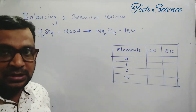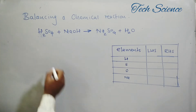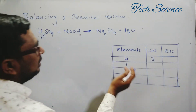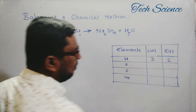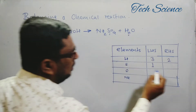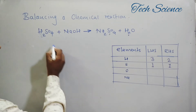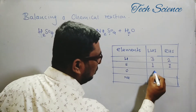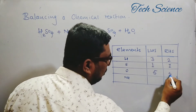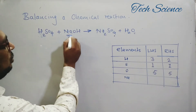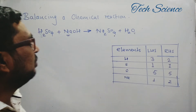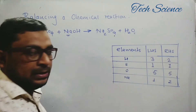Now it's time to count how many atoms are present for each element. For hydrogen: on the left-hand side we have two from H₂SO₄ plus one from NaOH, giving three; on the right-hand side we have two. For sulfur: left-hand side is one, right-hand side is one. For oxygen: left-hand side is four plus one, giving five; right-hand side is four plus one, giving five. For sodium: left-hand side is one, right-hand side is two. So oxygen and sulfur are already balanced, but hydrogen and sodium need to be balanced.